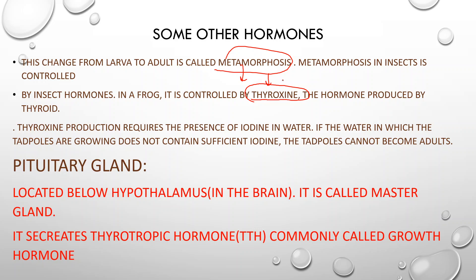Now we will talk about the pituitary gland. The pituitary gland is located below the hypothalamus. I will show you — this is your human face, this is your brain, these are the ears. The pituitary gland is located in this direction, below the hypothalamus. This is called the master gland.